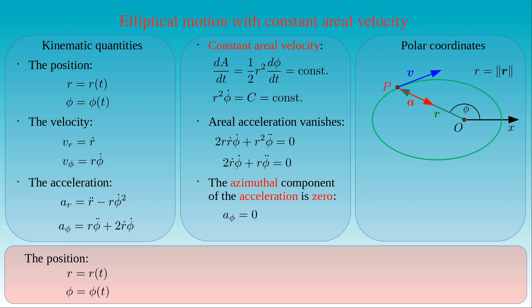The radial component of the velocity of the body is given by the derivative of the radial coordinate R with respect to time. Its azimuthal component is equal to the radial coordinate R times the derivative of the azimuthal angle phi with respect to time. By substituting the magnitude of the aerial velocity in this expression, we can write the azimuthal component as two times the length of the aerial velocity divided by the radial coordinate R.